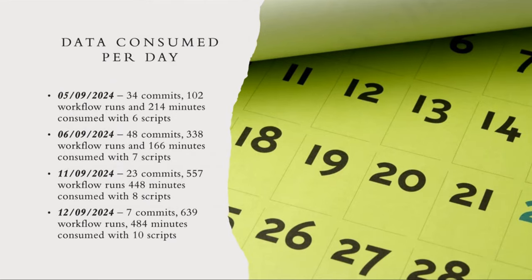When we started this project, we wanted to log data consumed per day. On September 5th 2024, we had 34 commits, 102 workflow runs, and 240 minutes consumed with 6 total scripts. The next day we had 48 commits, 338 workflow runs, and 166 minutes consumed with 7 scripts. On September 11th, we had 23 commits, 557 workflow runs, and 248 minutes consumed with 8 scripts. On September 12th, we had 7 commits, 639 total workflow runs, and 484 minutes consumed with 10 scripts. Note that commits and minutes are per day, not cumulative.